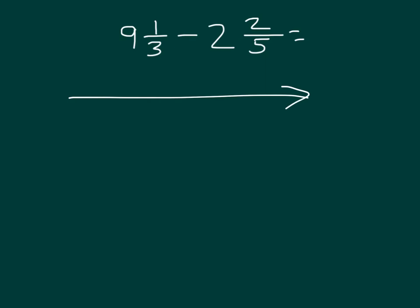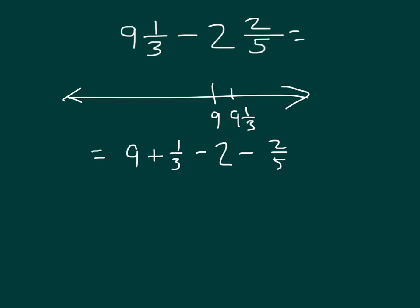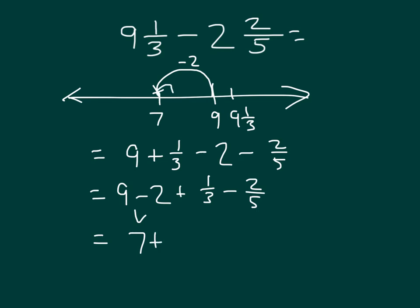Here's one last problem. We have 9 and 1 third, and we're subtracting 2 and 2 fifths from there. We'll start from 9 because it's easier to think of starting from 9 rather than 9 and 1 third. So it is 9 plus 1 third minus 2 minus 2 fifths. Regrouping the whole numbers, 9 minus 2 is 7, so on the number line we go from 9 back to 7. Then we're adding 1 third but subtracting 2 fifths, and since 2 fifths is bigger than 1 third, we'll be less than 7.